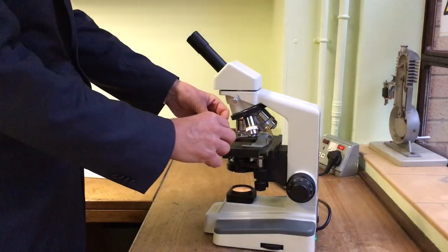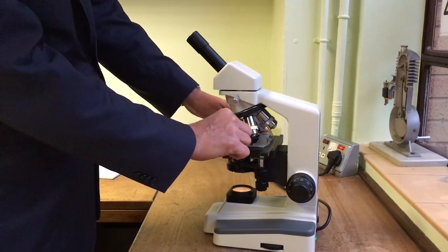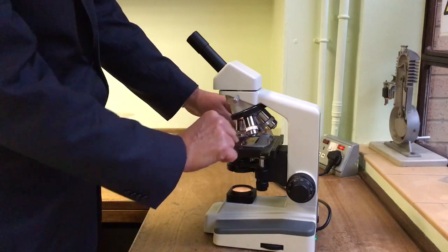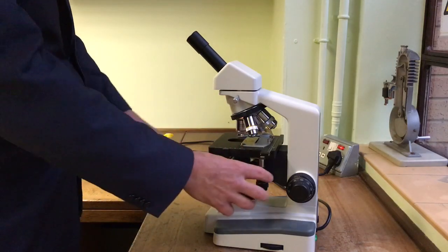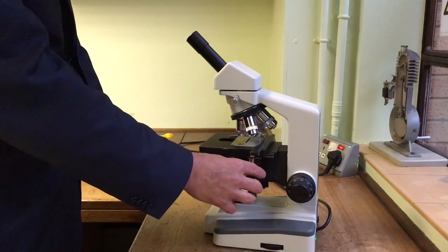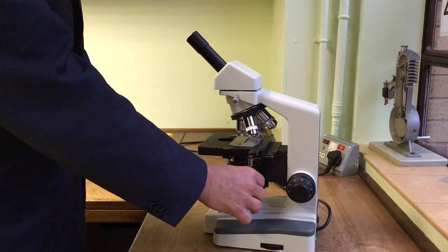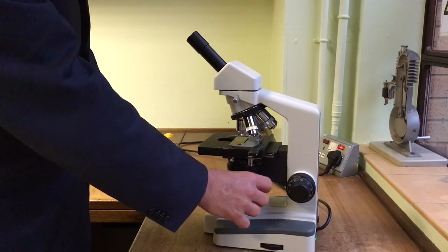Placing the microscope slide into the clip. The light shines through the slide so that I can view the cells. I'm using this to maneuver the slide around to find the bit I like.